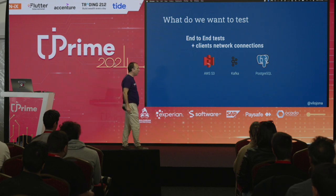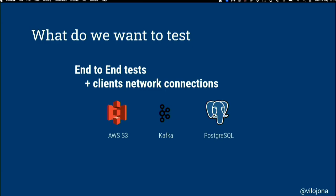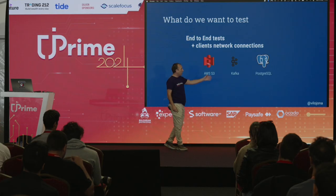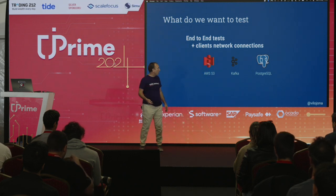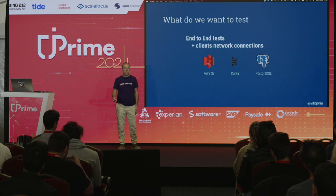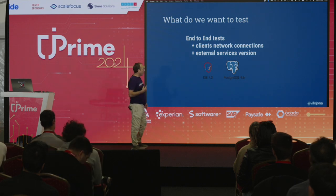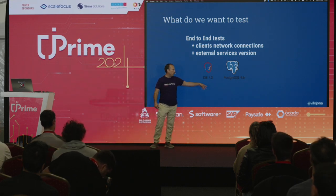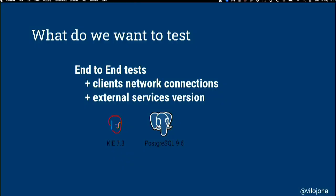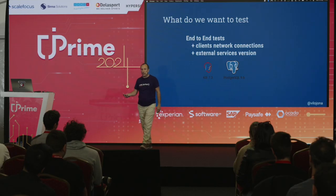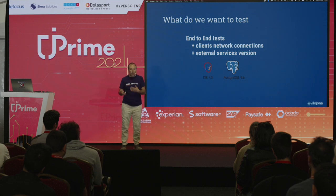So we wanted to test everything — that our connections to S3 were working regarding ephemeral links, that our Kafka index was correct, and that we were storing information in the PostgreSQL database as needed. We also wanted to test with real versions, because it's not the same using PostgreSQL 9.6 versus 8, or the JBPM engine in version 7.3 versus 6.5. We wanted to test our application with real versions.